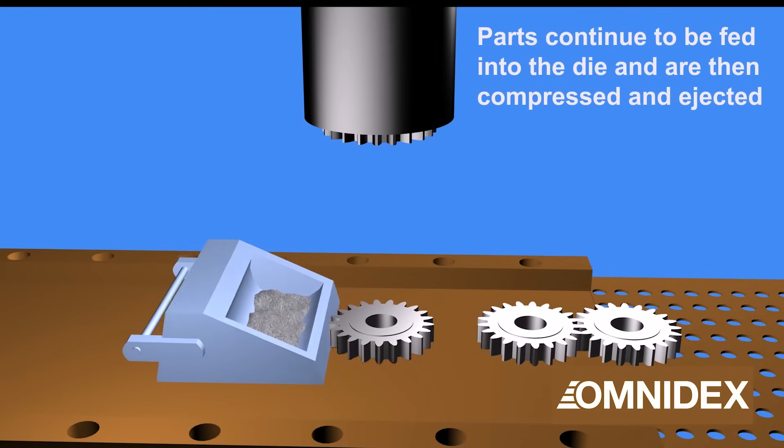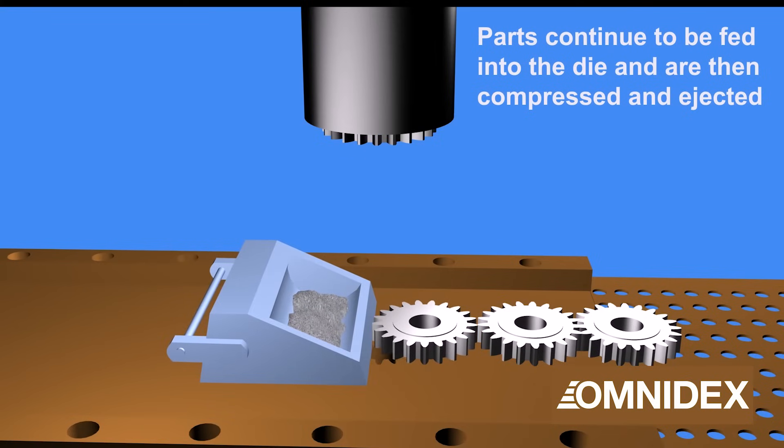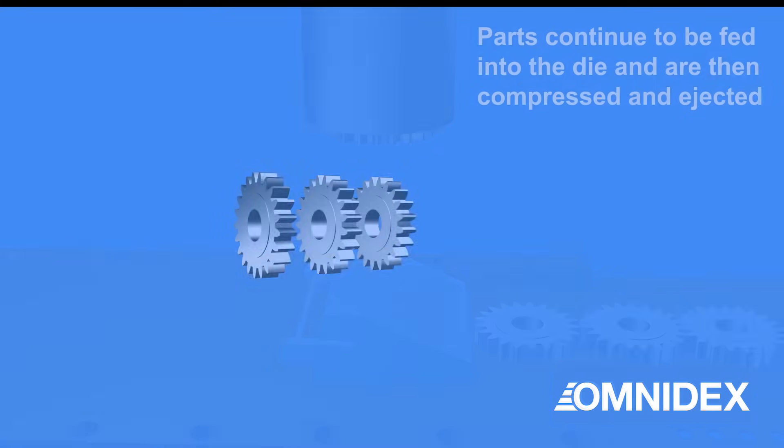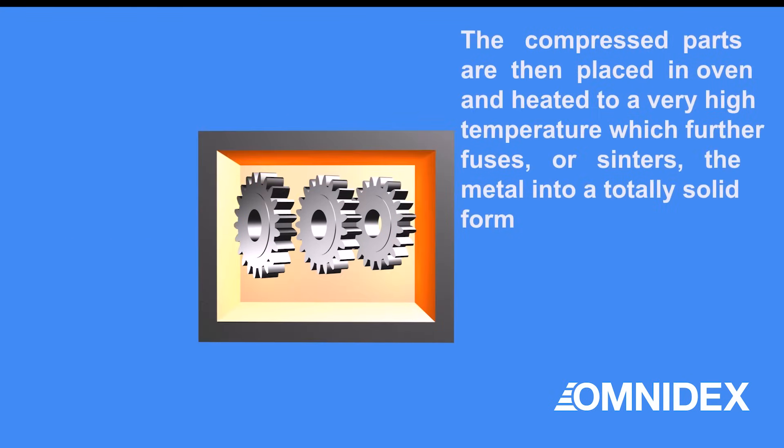The next stage usually takes place in a belt conveyor furnace. The compressed parts are heated to a very high temperature, which fuses or sinters the metal into a solid piece.